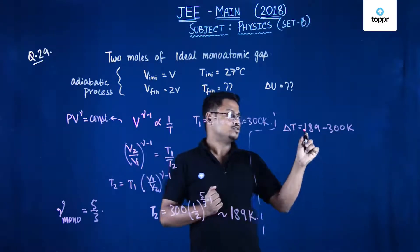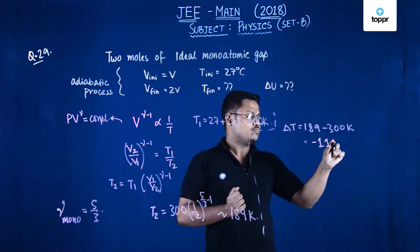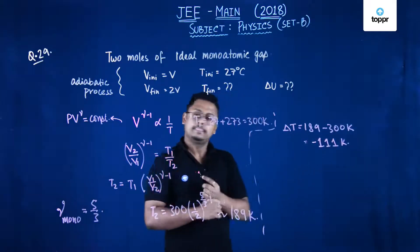And what will be the value? So 200, 100 plus 11, that is minus 111 Kelvin.